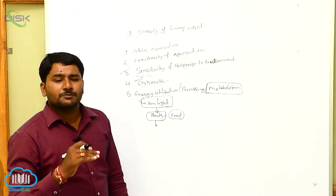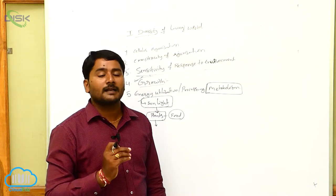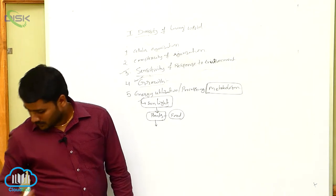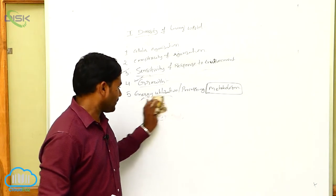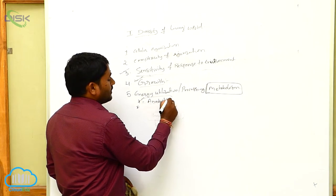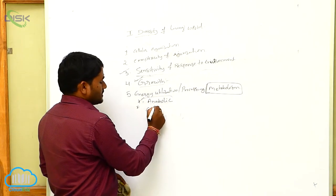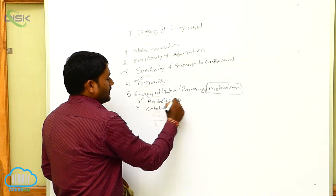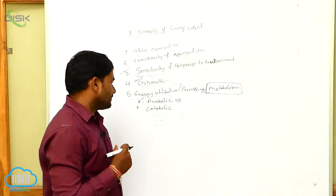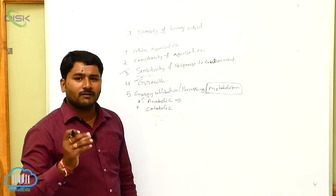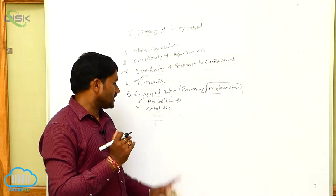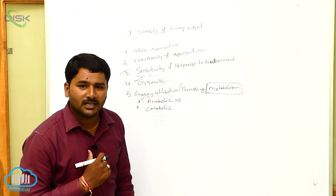The chemical reactions going on in our body are of two types. Our metabolism occurs in two ways: one is anabolic processes or anabolic reactions, and the second is catabolic reactions. Anabolic processes involve the conservation or storage of energy — that is called anabolic processes or anabolic reactions.